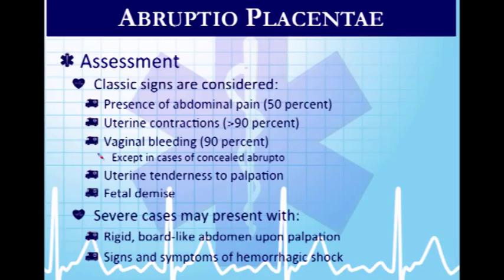For abruptio placenta, about half of women will have abdominal pain. More than 90% will have uterine contractions triggered by separation, and 90% will have vaginal bleeding unless it's all concealed underneath. There may be fetal demise — mom might not feel movement and fetal heart tones may be absent. In severe cases with heavy hemorrhaging, the uterus will feel rigid like a bowling ball instead of soft, and mom will present with signs and symptoms of hemorrhagic shock.